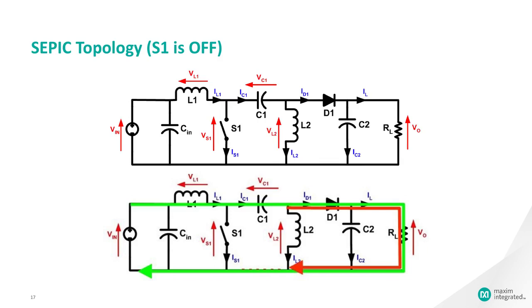C1, however, is being charged by L1 during this off cycle, and will in turn recharge L2 during the on cycle.